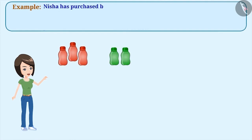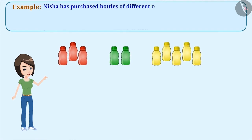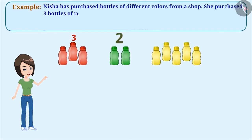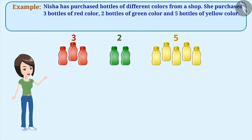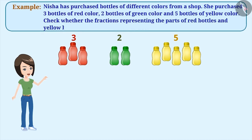Nisha purchased different colored bottles from a shop. She purchased three red bottles, two green bottles, and five yellow bottles. Can you tell whether the fractions representing the parts of red bottles and yellow bottles are like fractions or not?